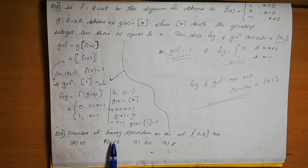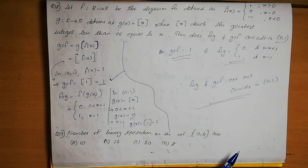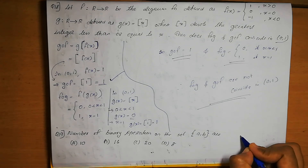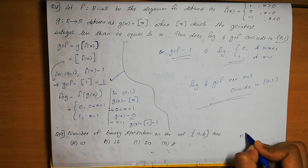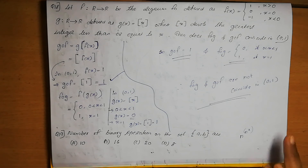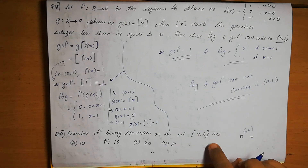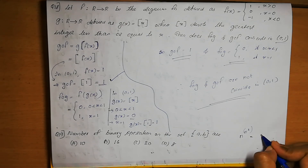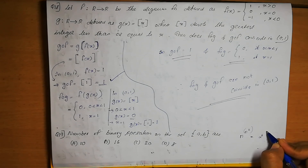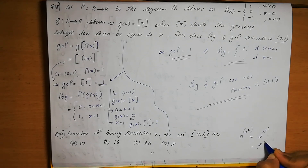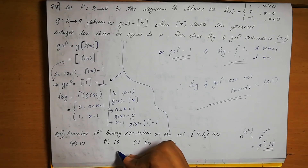Question number 19. Find the number of binary operations on the set {a, b}. We know the number of binary operations on a set with n elements is n raised to n squared. Here n equals 2, so the answer is 2 raised to 2 squared equals 2 to the power 4 equals 16. Option B is the correct answer.